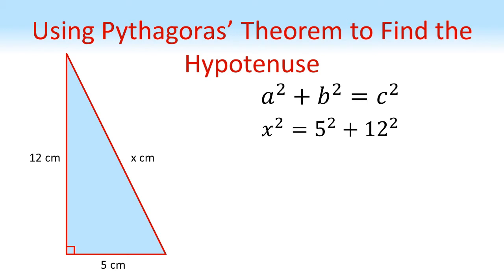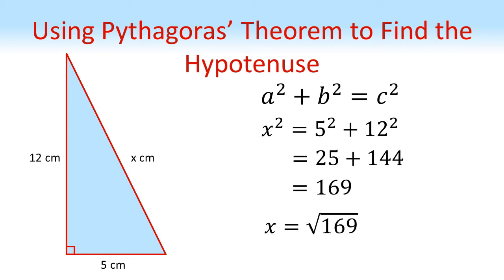Rearranging this to put the C squared on the left and replacing everything, we get that the hypotenuse X squared is equal to the shorter sides 5 and 12 squared and added together. So X squared equals 5 squared plus 12 squared, which is equal to 25 plus 144, which is 169. Now we want to find X. So far we've got that X squared is 169, so X is going to be the square root of this, which is going to equal 13 centimetres.